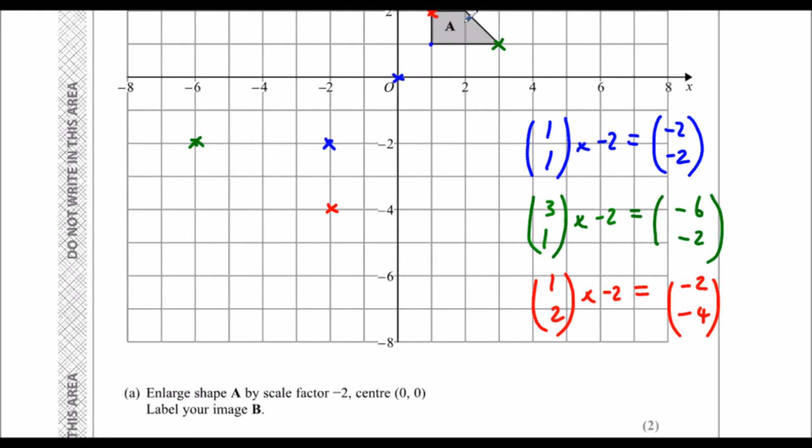And one more. So it was 2 along, 2 up. So 2, 2, times that by minus 2, which is minus 4, minus 4. So back 4, down 4. Which takes us to there. So our shape is now there.